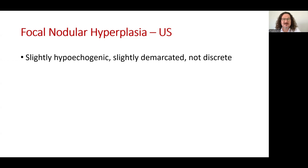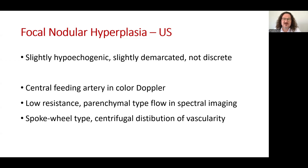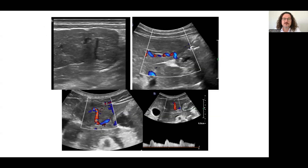On ultrasound, FNH is slightly hypoechoic compared to the parenchyma, slightly demarcated, and not a discrete lesion. The centropetal artery can be demonstrated by color Doppler ultrasound, which shows a low resistance, parenchyma-type flow in spectral imaging. The distribution is centrifugal. This is a good example of FNH showing the lesion with similar echogenicity to the background parenchyma, the fibrovascular scar, and the feeding artery.